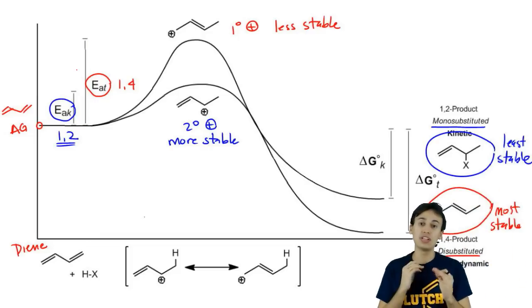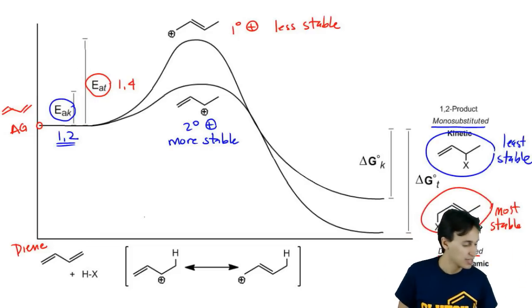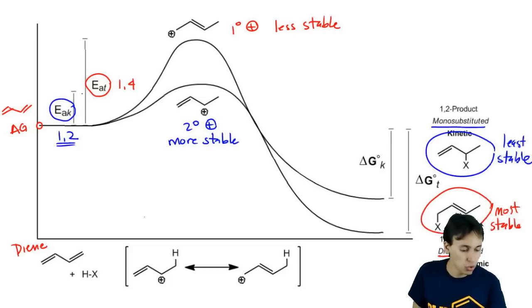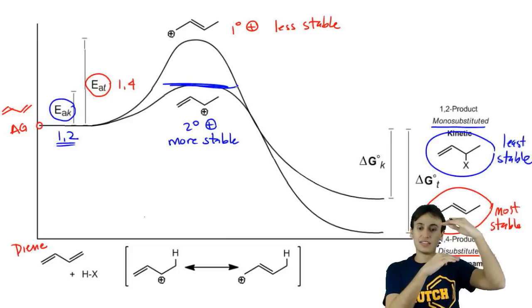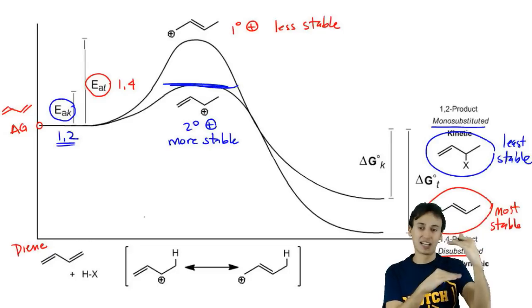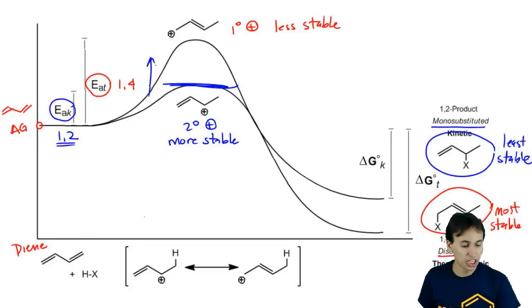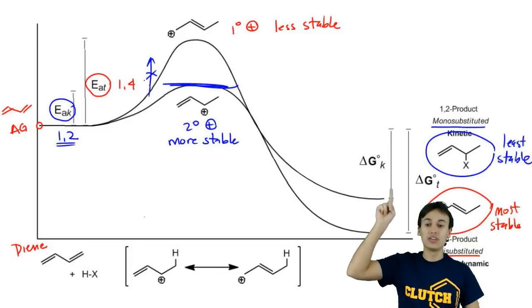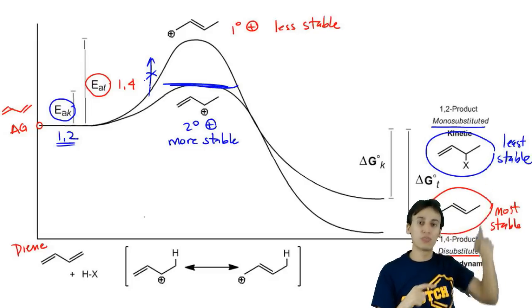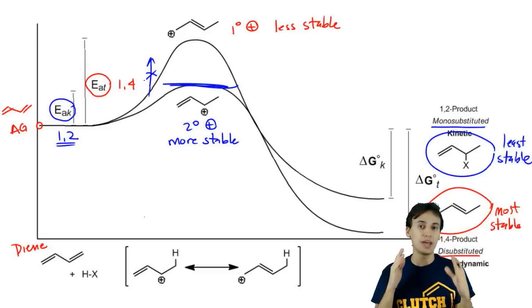Whereas if we want to favor the less stable product, then we make the reaction conditions very cold so that the ambient energy is very low so that it's only going to be able to cross the threshold of less activation energy and it's never going to be able to form the less stable intermediate because it's so cold that it can't overcome the very steep activation energy of the thermodynamic product.